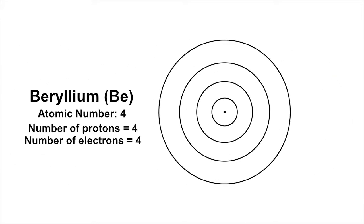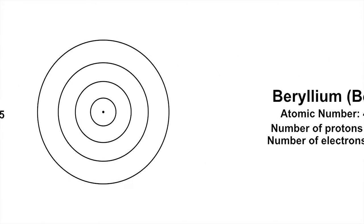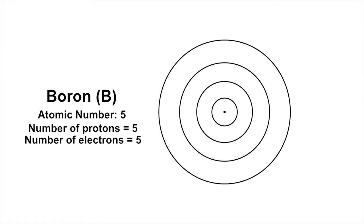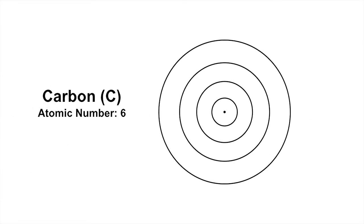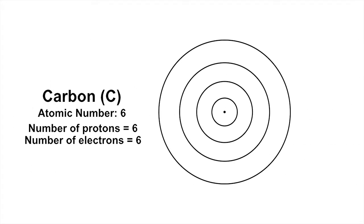Beryllium has four electrons, with two in the first shell and two in the second shell. Boron has five electrons, two in the first shell and three in the second shell. Carbon has six electrons, two in the first shell and four in the second shell.